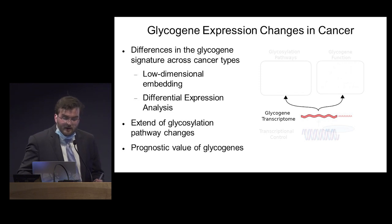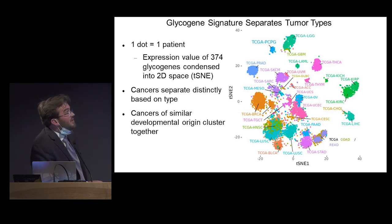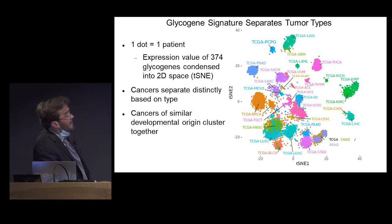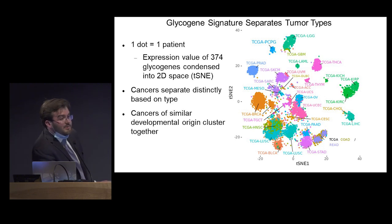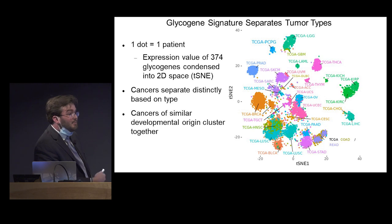What I'd like to show with this plot is the results of embedding all of the Cancer Genome Atlas patients — one dot in this plot represents one cancer patient. I'm taking the expression values of all the glycogenes involved in glycosylation and measuring the similarity between every single patient. Every color is a different cancer type. Clearly, there are different clusters for different cancer types, which means that glycosylation signatures are distinct for each cancer type, meaning you should expect different glycans to be present in each cancer type.